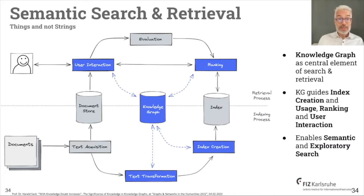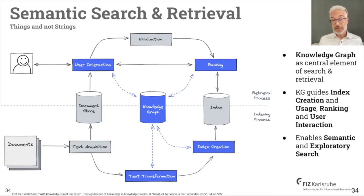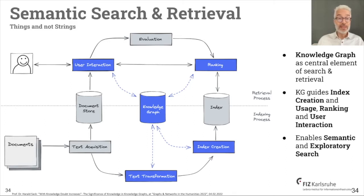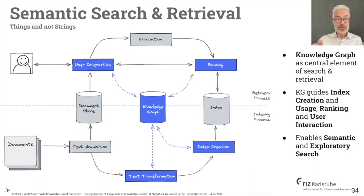Another very important application is semantic search and retrieval. At the center of the search and retrieval process, instead of a database, you put a knowledge graph as the central element. This guides index creation, index usage, ranking, and user interaction — all supported by the knowledge graph — and this enables semantic and exploratory search.